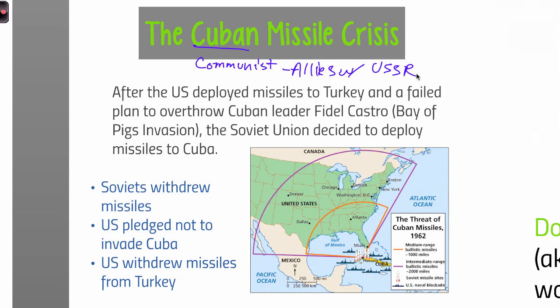Part of the problem is that during this time, we send missiles to Turkey, which is very close to the Soviet Union. We also try to overthrow the communist leader Fidel Castro, which ends up in disaster. Unfortunately, the Soviet Union finds out that we tried to overthrow the Cuban leader. So with all of this mixed together, it's going to lead to the Soviet Union deciding to deploy missiles to Cuba.